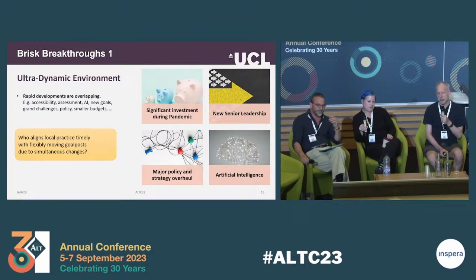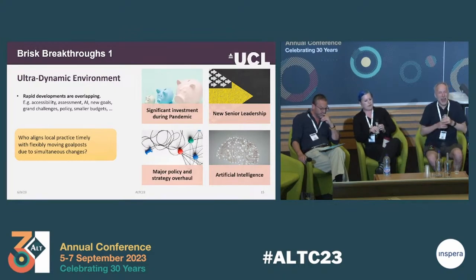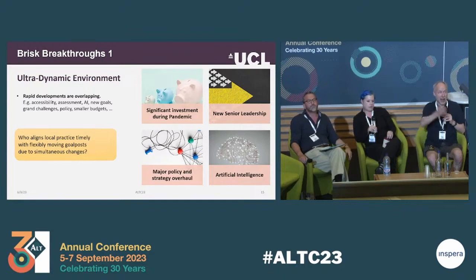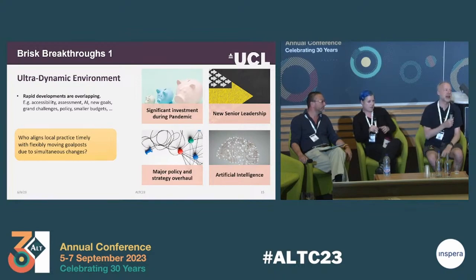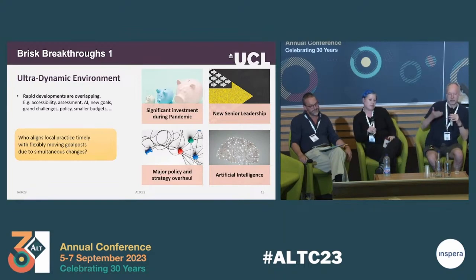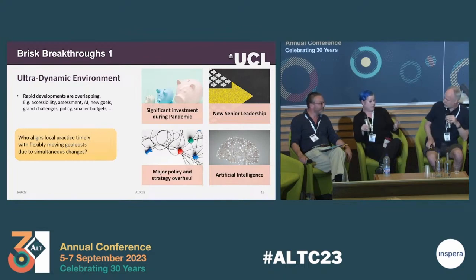We are working in a very dynamic environment. Lockdowns and then AI have accelerated the speed of change significantly. During the pandemic, UCL had significant investment; after lockdowns we're seeing severe cuts. Then UCL gained completely new senior leaders who changed the whole institution, causing major policy and strategy overhauls. And then AI came along. The question is: who aligns local practice in a timely manner in the context of flexibly moving goalposts when we face so many simultaneous changes?